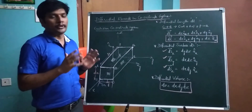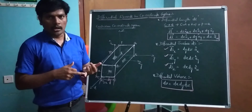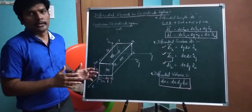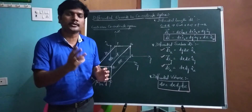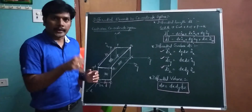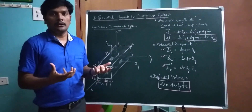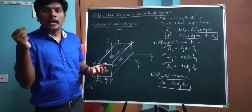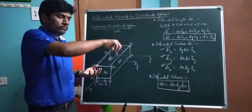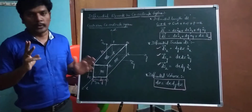We have three coordinate systems: Cartesian, cylindrical, and spherical. First, we consider the Cartesian coordinate system. In a Cartesian coordinate system, three coordinates are used to define a point: x, y, and z. Three unit vectors are considered — Ax cap, Ay cap, and Az cap — representing the direction of a vector moving in the x, y, and z directions respectively.